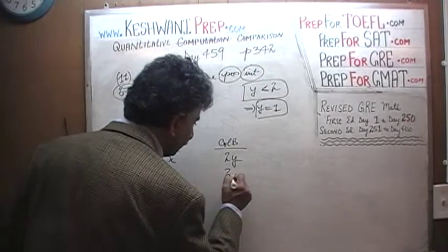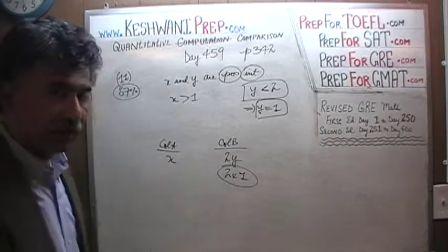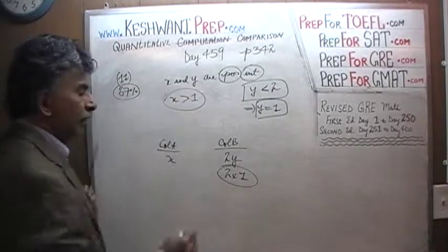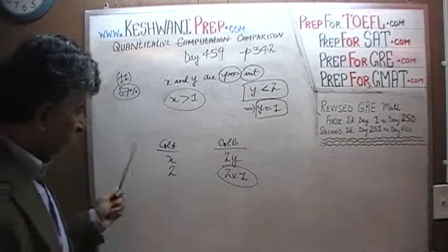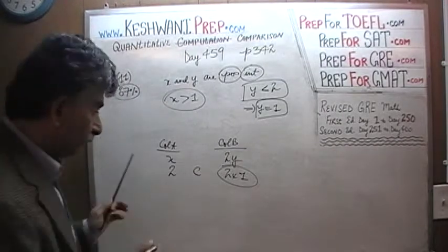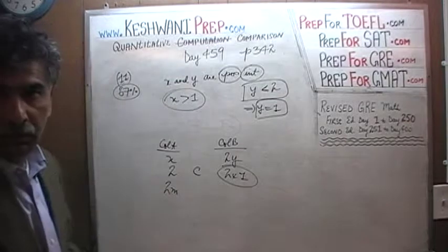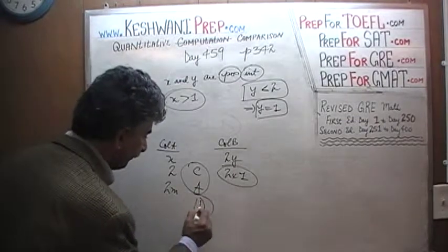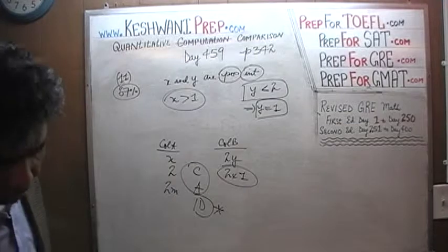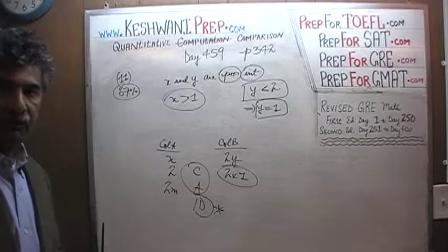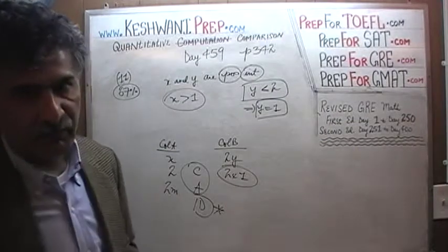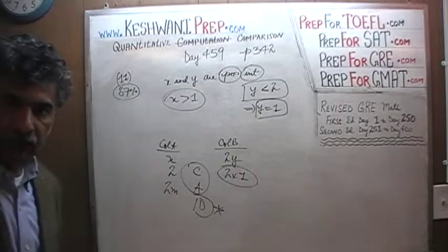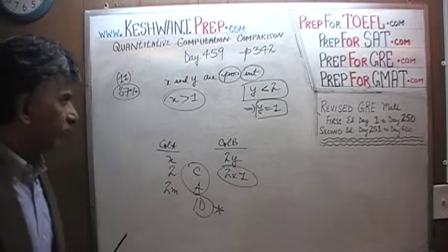Y cannot be 0, cannot be negative 1, and it cannot be 3 because it has to be less than 2. The only value y can assume is 1. So column B is fixed — it is just 2 times y, which equals 2. What about x? X is more than 1, so it could be 2, in which case the answer is C. Or x could be 2 million — it could be anything more than 1 — in which case the answer is A. Therefore the answer is D. There are infinite possibilities for x: it could be 2, 3, 4, 5, 6, anything it wants to be.